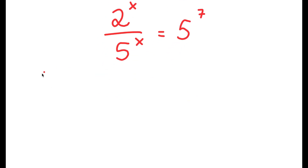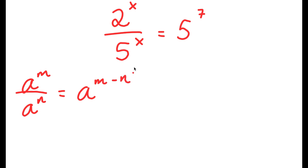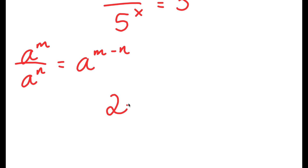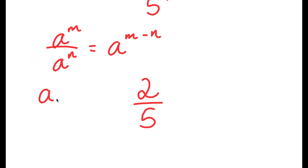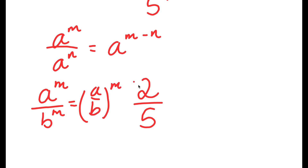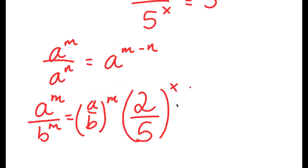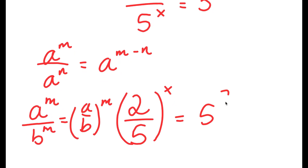Now from here, an important property of exponents is that if I have something in the form a to the power of m over b to the power of m, this is equal to a over b to the power of m. So 2 to the power of x over 5 to the power of x equals 2 over 5 to the power of x. And this is equal to 5 to the power of 7.